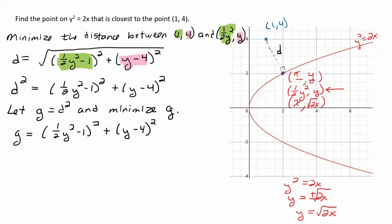So now I have g equals one half y squared minus 1 squared plus y minus 4 squared. To minimize g, now we need to find the derivative of g with respect to y. We could actually think of g here as a function of y. Let's take the derivative of g with respect to y. We're going to use our power rule and then we have to use our chain rule. We have to take the derivative of this inside piece here.